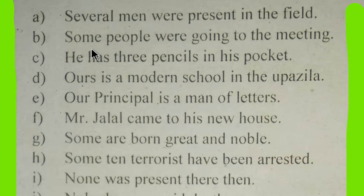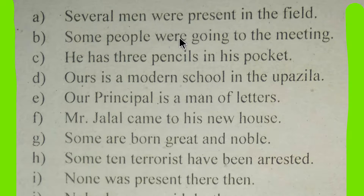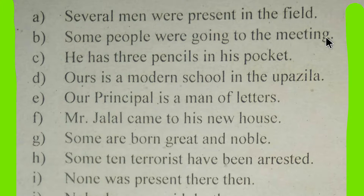Here, the next sentence: 'Some people were going to the meeting.' 'People' is a noun because it is the subject of the sentence. 'Some' is an adjective. 'Were' is an auxiliary verb and 'going' is the principal verb. 'To' is a preposition and 'meeting' is a noun.